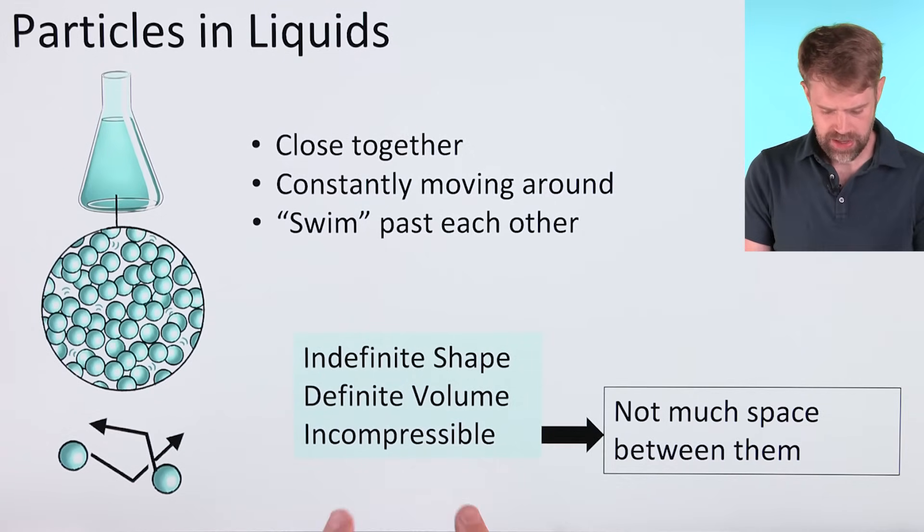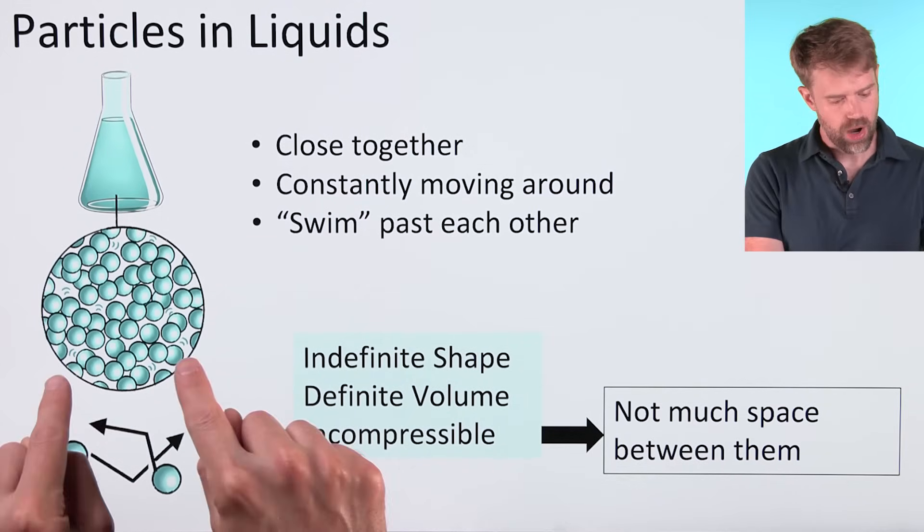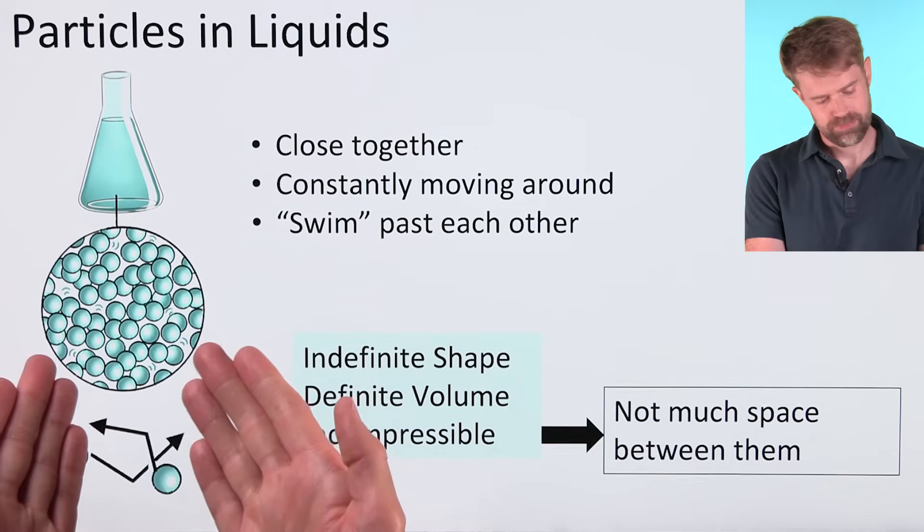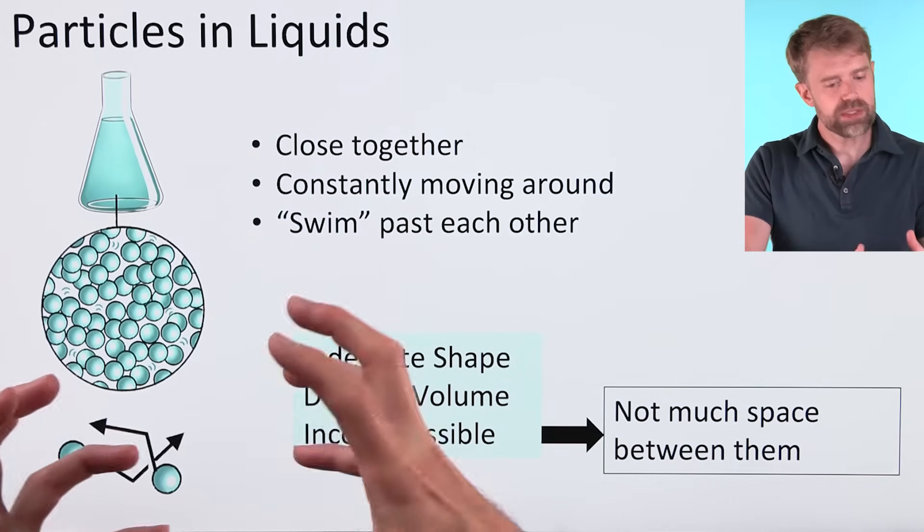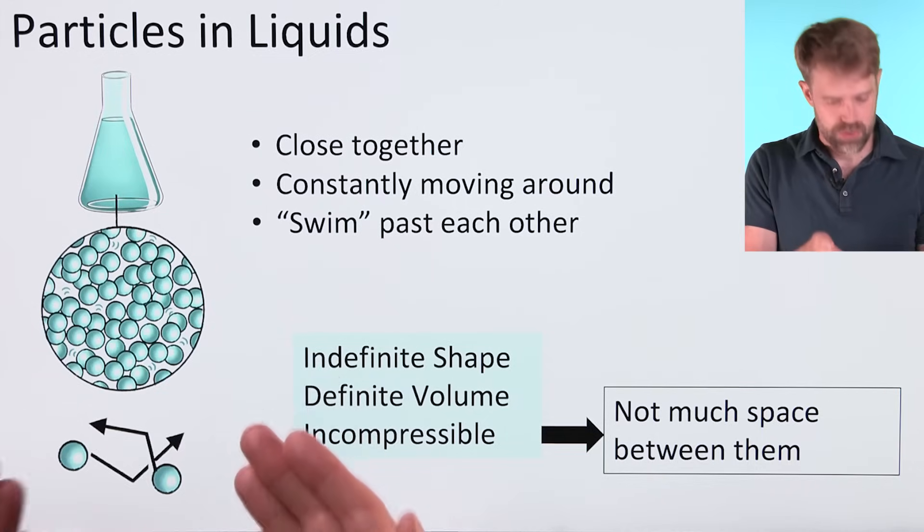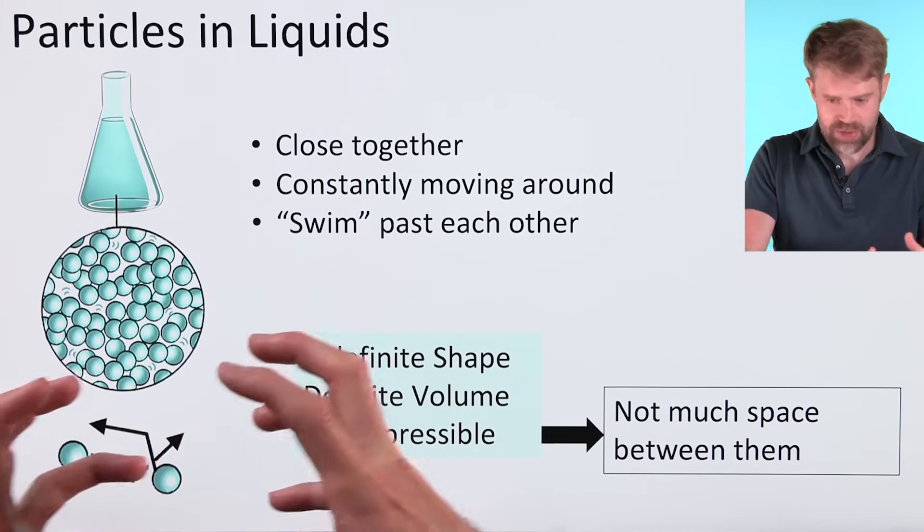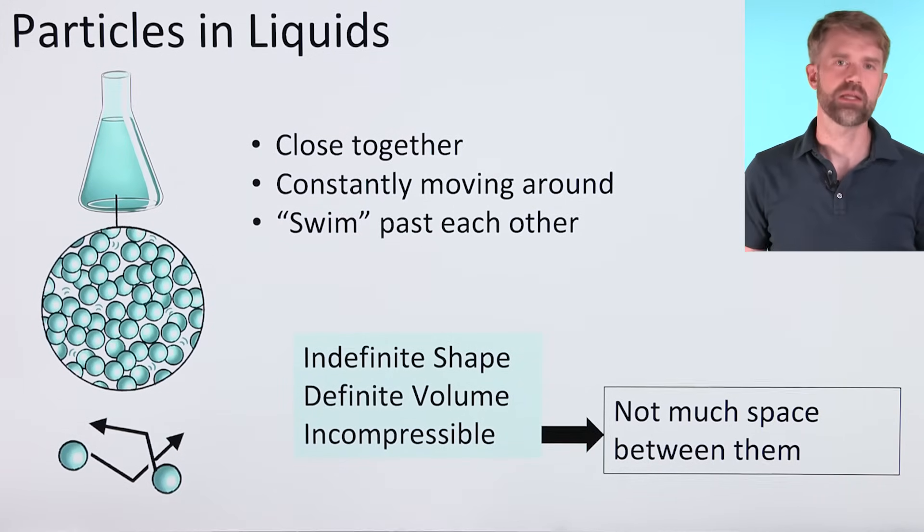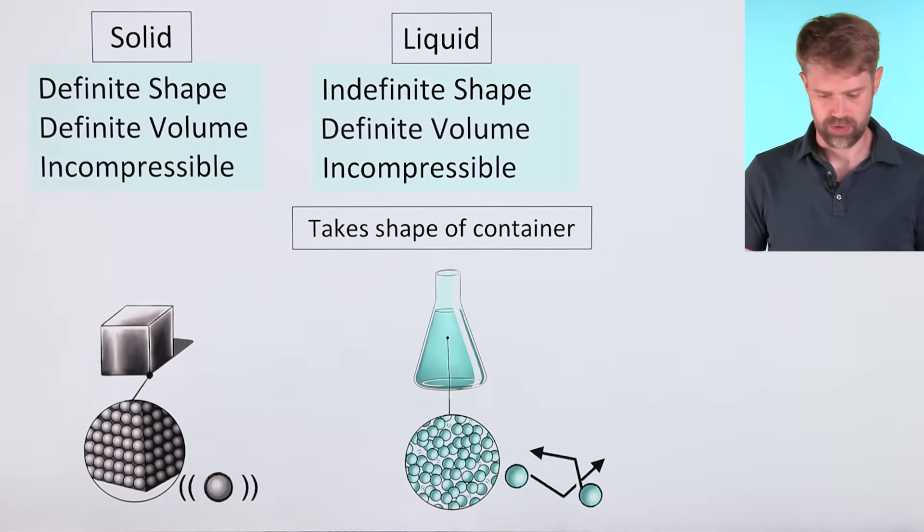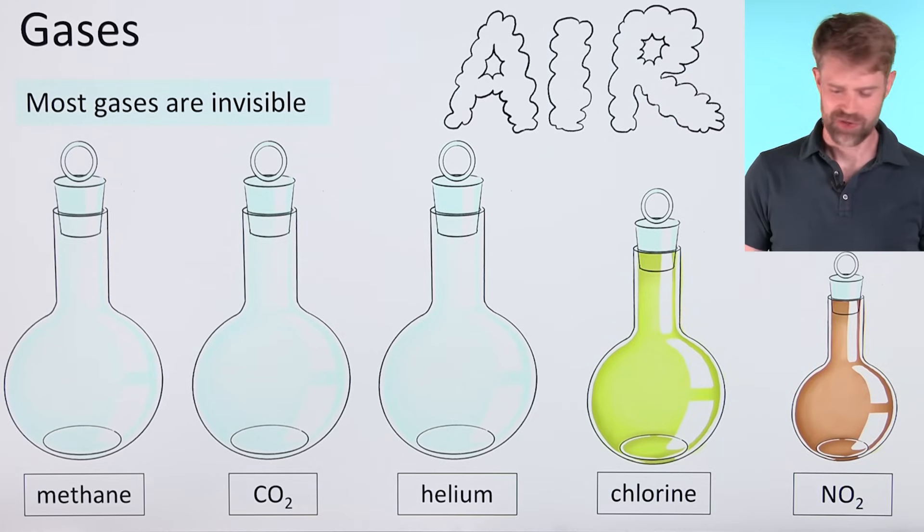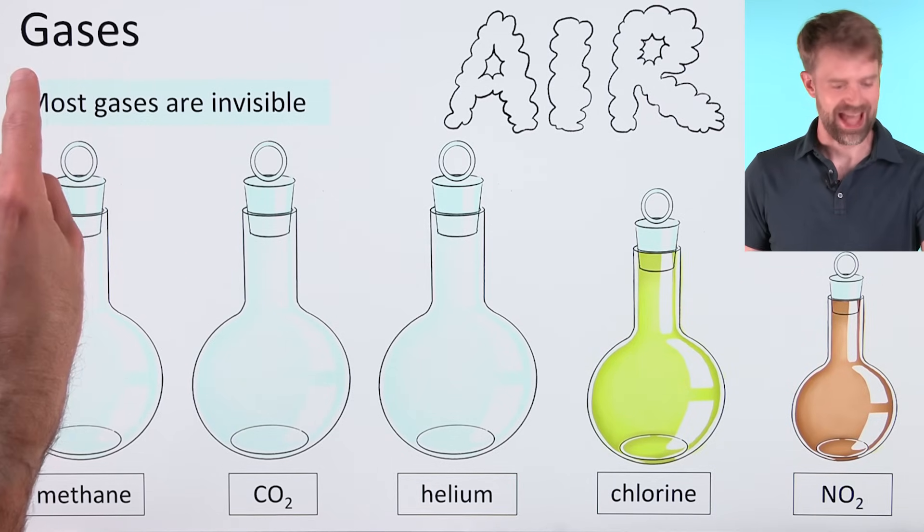But we can see why liquids are still incompressible like solids. The particles might be a little bit looser than in a solid, but there's still not really much space between them. So it's hard to squish them together any closer. They remain incompressible. Here now is everything that we've talked about with liquids. We'll move on to our last phase of matter, gases.